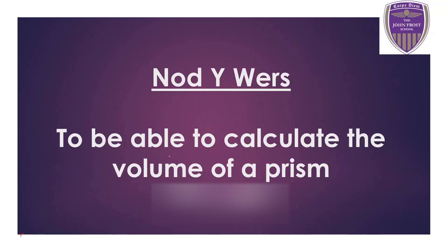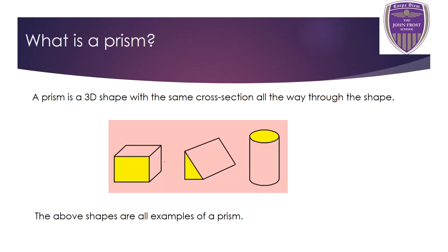Welcome to this video on how to calculate the volume of a prism. A prism is a 3D shape which has the same cross section running all the way through. This shape has a rectangular yellow face running right the way through, this one has a triangular front face, and this one has a circular face running through it like a tube or a Pringles can.